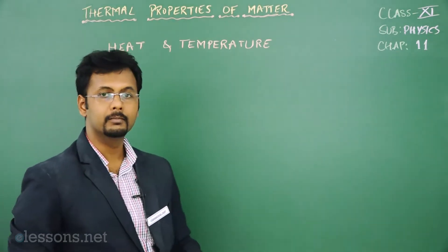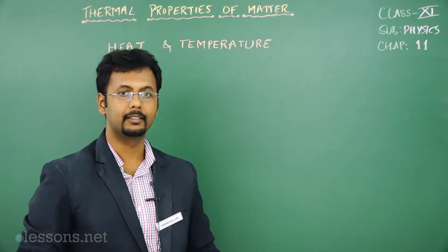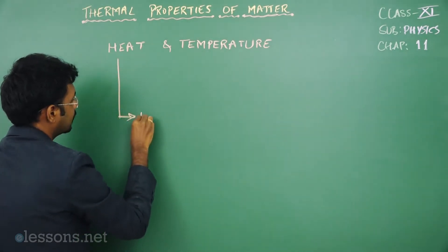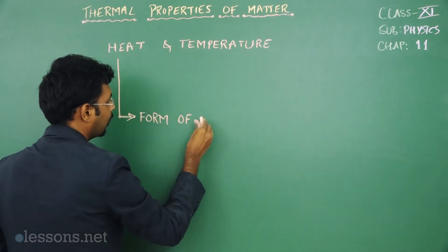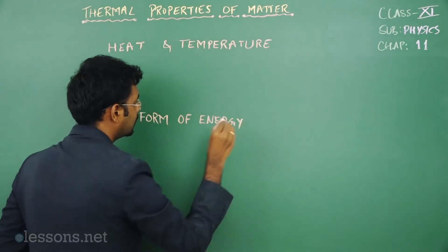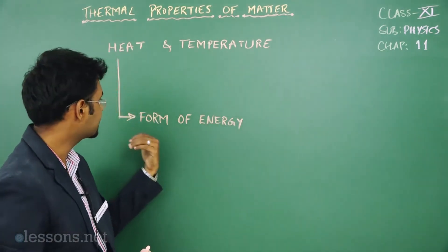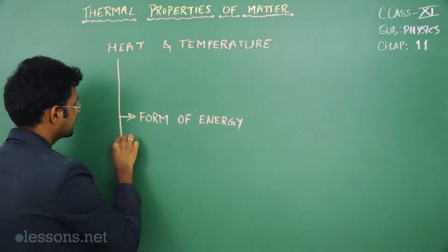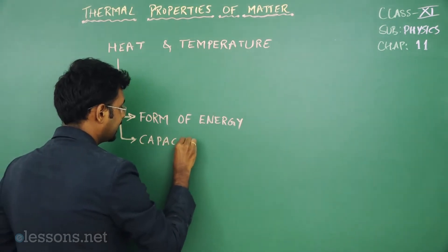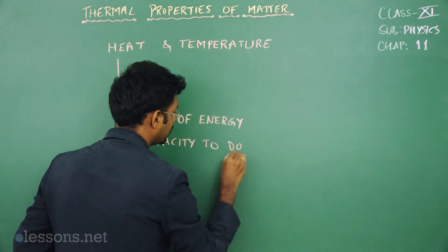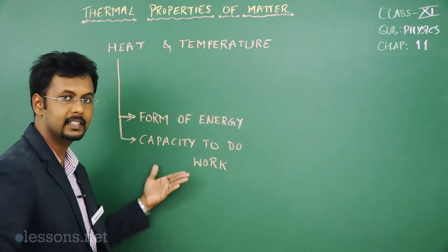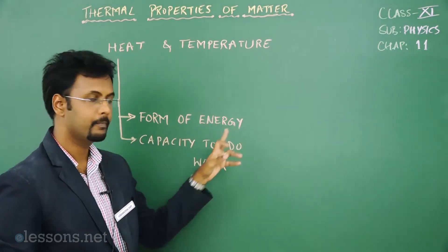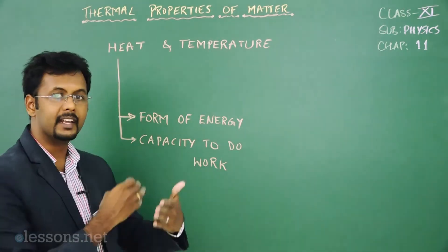What do you mean by heat? What exactly is heat? It is nothing but a form of energy. Heat is a form of energy. Another basic definition is that heat is the capacity to do work. So you have two definitions: one is heat is a form of energy, and the other is heat is the capacity to do work.